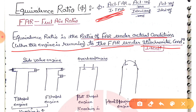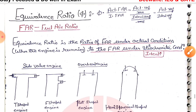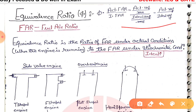Mathematically, since FAR equals mass flow rate of fuel divided by mass flow rate of air, the equivalence ratio simplifies to: actual mass flow rate of fuel divided by ideal (stoichiometric) mass flow rate of fuel.